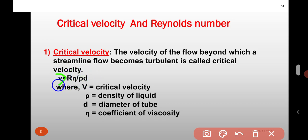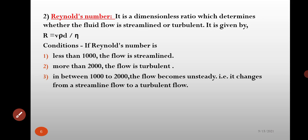Where V is the critical velocity, rho is density of liquid, d is diameter of tube and eta is coefficient of viscosity.